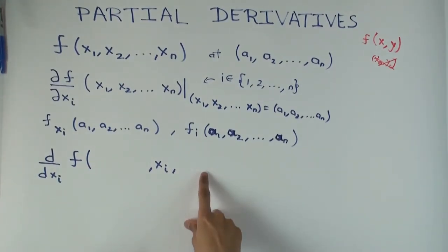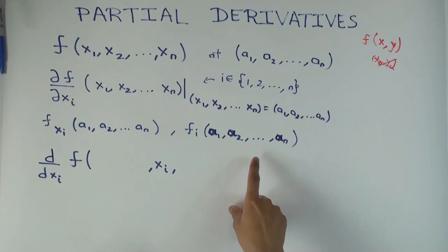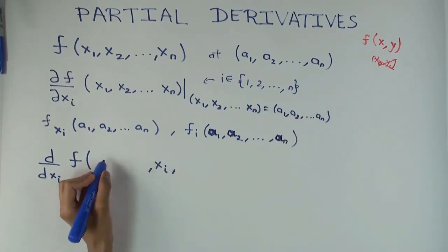What happens to all the other coordinates? What do they become? Fixed. Fixed. At what value? A1, A2. Yeah.